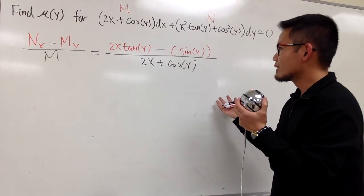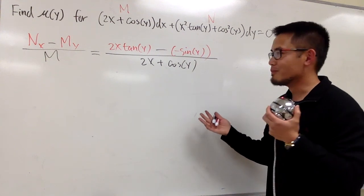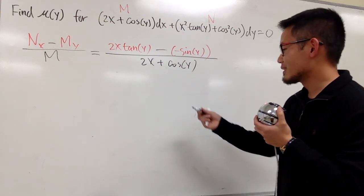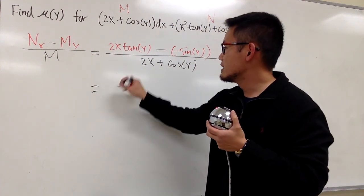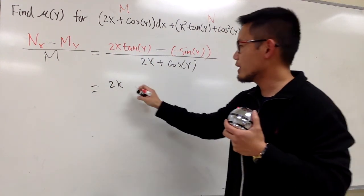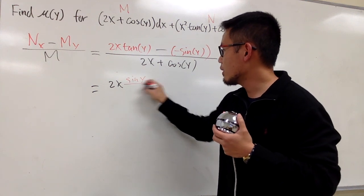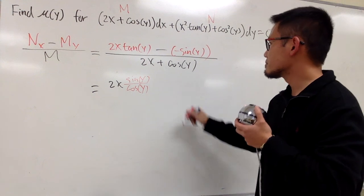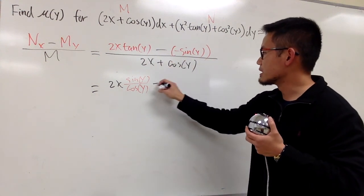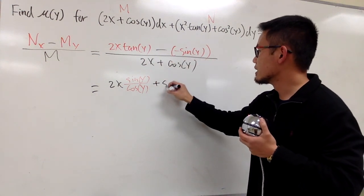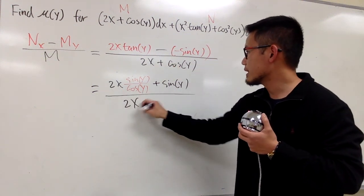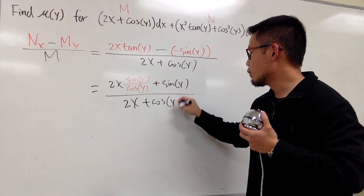Okay, how in the world is this just in terms of y? Well, let's see, this is 2x, and for the tangent y, let's just go ahead and write this as sine y over cosine y. Okay, let's put a parenthesis around it. And then minus minus becomes plus, and this is just sine of y, and then this is all over that, which is 2x plus cosine of y.